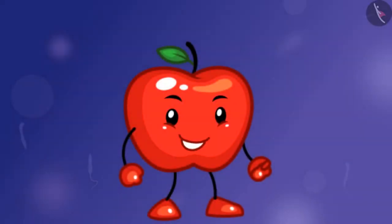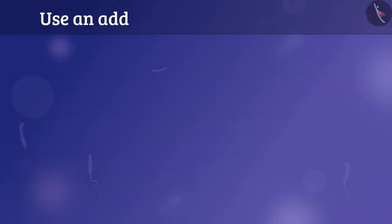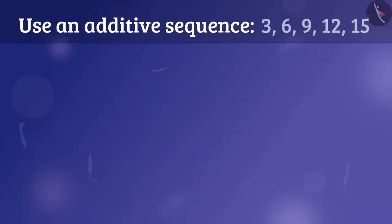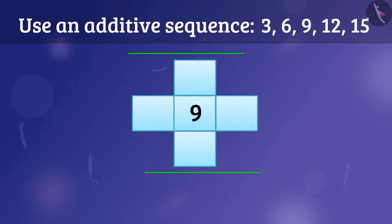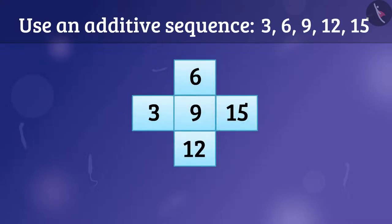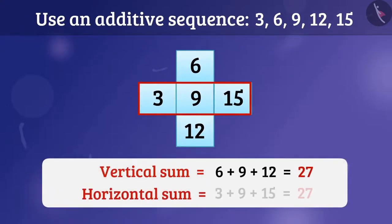Similarly, we can also use an additive sequence to solve a third order cross puzzle. See, I have done it. And here, the vertical and horizontal sums are 27 respectively.